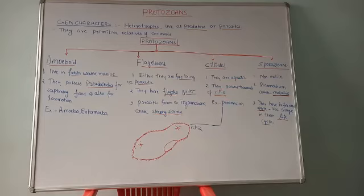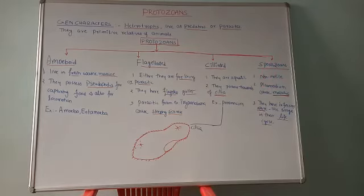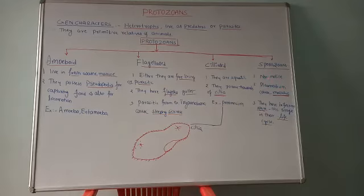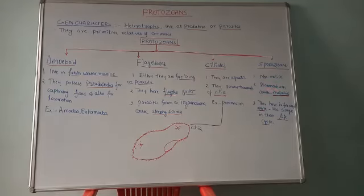The fourth group is sporozoans. 'Sporo' refers to spore-like structures present in their life cycle, hence the name sporozoa. These organisms do not possess any motile structure like flagella, cilia, or pseudopodia — they are non-motile. The best example is Plasmodium vivax, a protozoan that lacks cilia or flagella and causes the disease malaria.